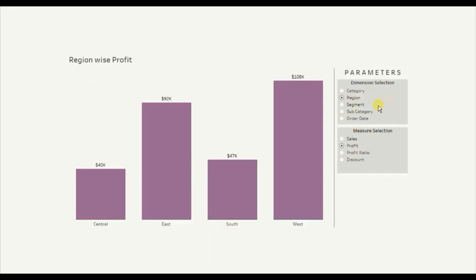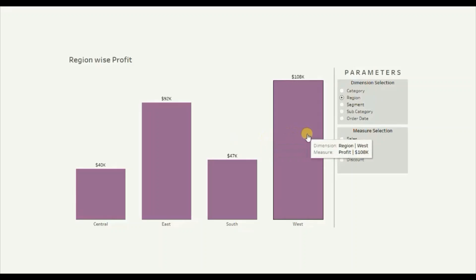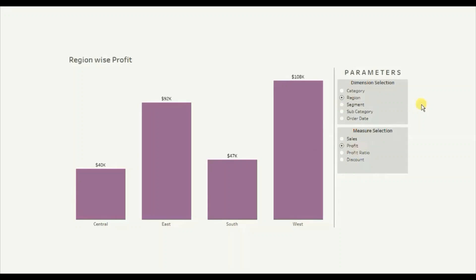I have already created a detailed video on how to change the dimension or the measure in the view using a parameter in Tableau. You will find the link of that video on the top right corner and I have also added the link in the description below. In today's session we will see how we can show or hide a parameter when a particular value is selected from another parameter.